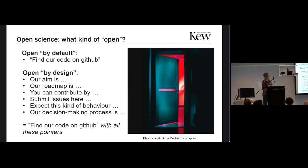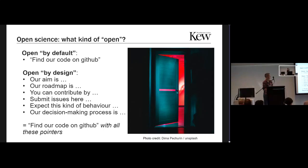Then there's a very active kind of open, which is open by design, where you're very explicit about what your aim is with the project: what your roadmap is going to be, how people can contribute, what kind of behavior you'd expect, how difficulties will be resolved — a bit like having a code of conduct for a meeting. What the decision-making process will be, where you can submit issues. You've got a whole set of documented, explicit information and metadata about the project and how you can become part of it — as well as finding all the code on GitHub, it's got all these pointers with it.